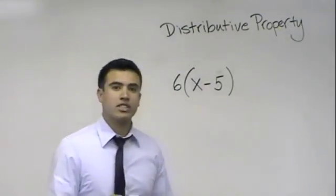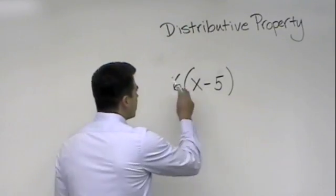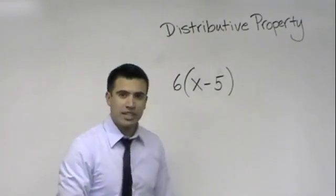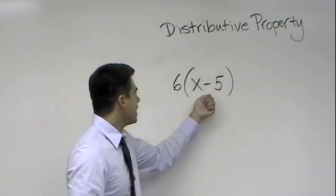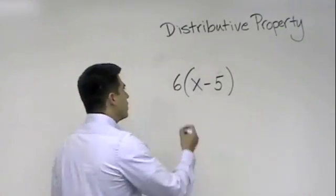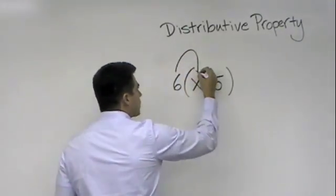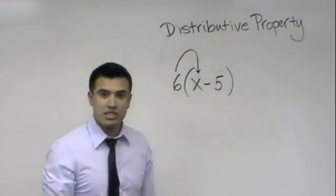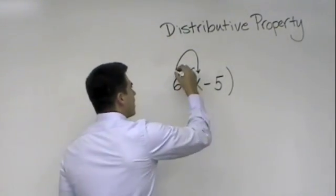I call it rocket launcher target. So, I pretend like this 6 has a rocket launcher on it and it wants to go ahead and hit the x and the 5. And when it does, it will multiply. So, I go, and I actually make the noise too, just so you can kind of get the effects.